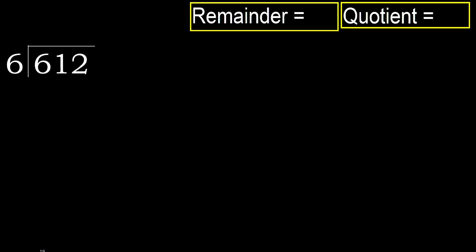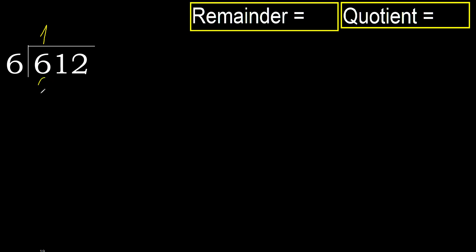612 divided by 6. 6 is not less, therefore start with 6. 6 multiplied by which number is nearest to 6 but not greater? 6 multiplied by 2 is 12, which is greater. Multiplied by 1 is 6, which is not greater. Subtract: 6 minus 6 equals 0.